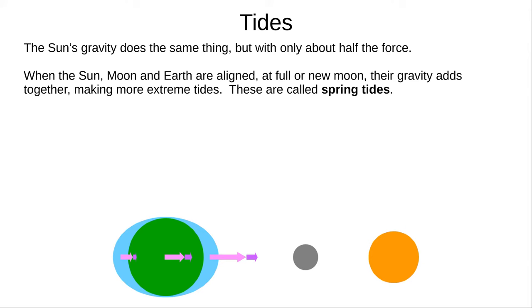When the Sun, Earth and Moon are aligned, at full Moon or new Moon, their gravity adds together. High tide is even higher, and low tide is even lower. These are called spring tides.